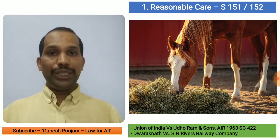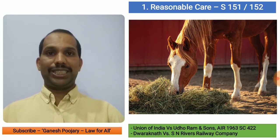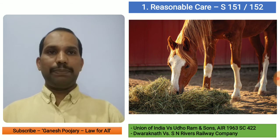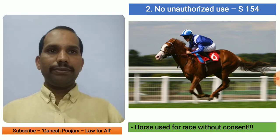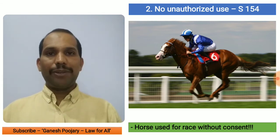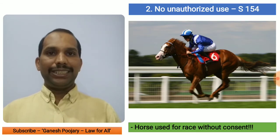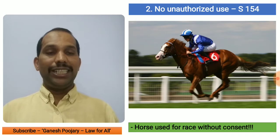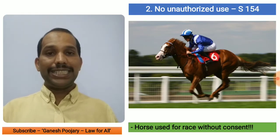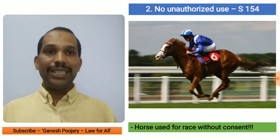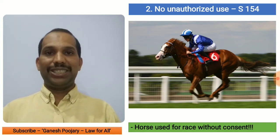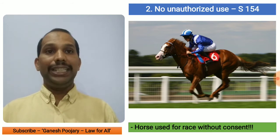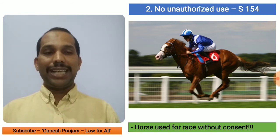To score well, you need to mention section numbers as well as case laws — that is very important. The second duty is no unauthorized use, discussed under section 154. The horse of A is given to B the Bailee with the intention that he takes care of it. He cannot take it to a horse race or compete with somebody else, because A's intention was just to take care of the horse. Using or misusing the goods without the consent of the Bailor is not okay.